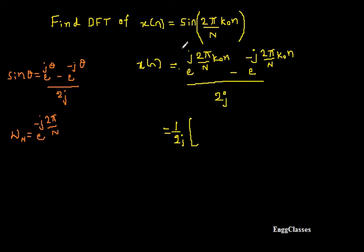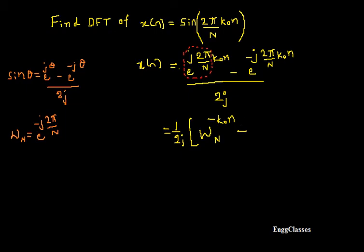Now I have e^(j·(2π/N)). I can write this as W_N, but is that exactly equal to W_N? No — because the negative sign is missing. So this must be W_N to the power of minus k₀n. Then for the second term, e^(−j·2π/N) is exactly equal to W_N, so I write it as W_N to the power k₀n.